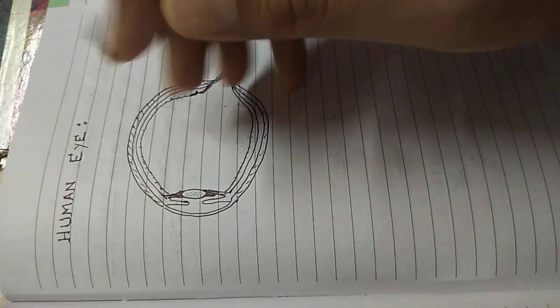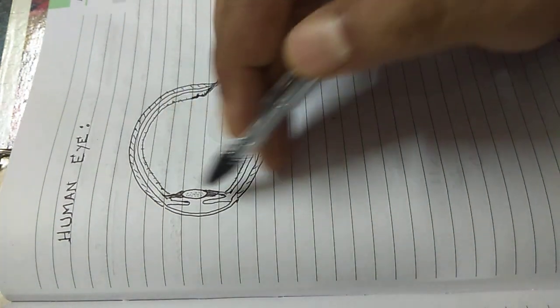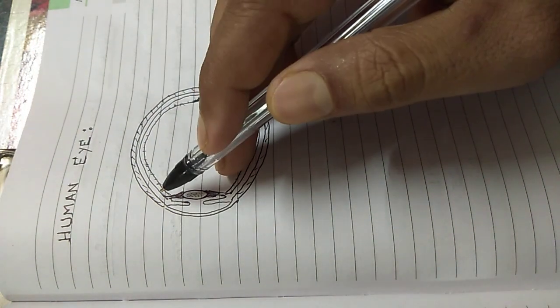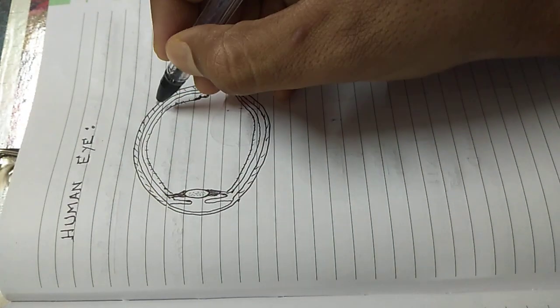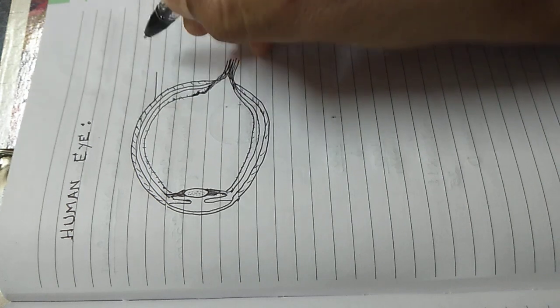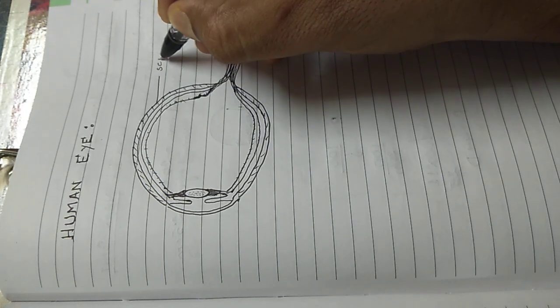It's a hollow spherical structure where the walls of the human eye have three layers. The outermost layer is a whitish layer which is called the sclera.